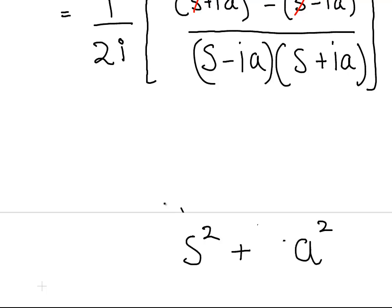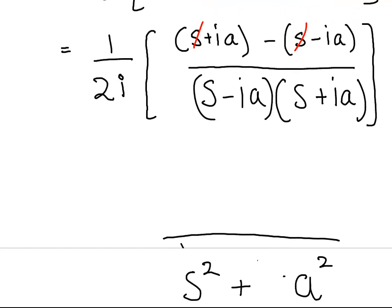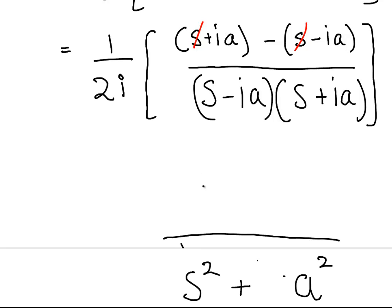The numerator is s. Let's go back up here a second. Is 2ia. Okay, all over 1 times 2i. Now I was sort of going over the side of a page there.